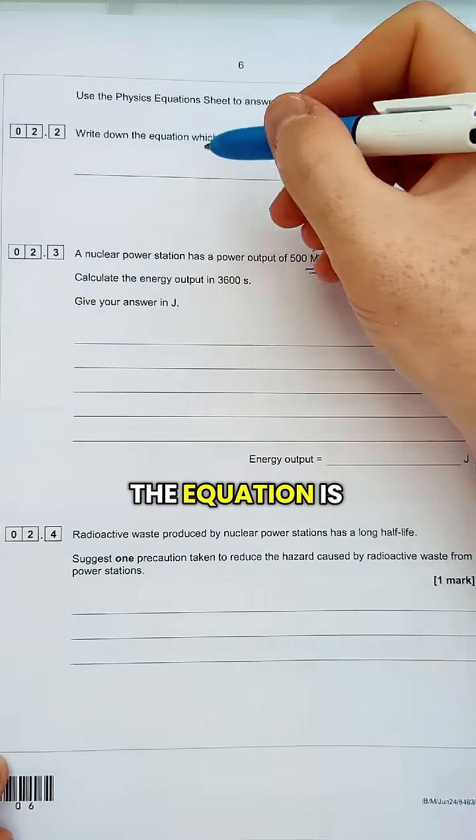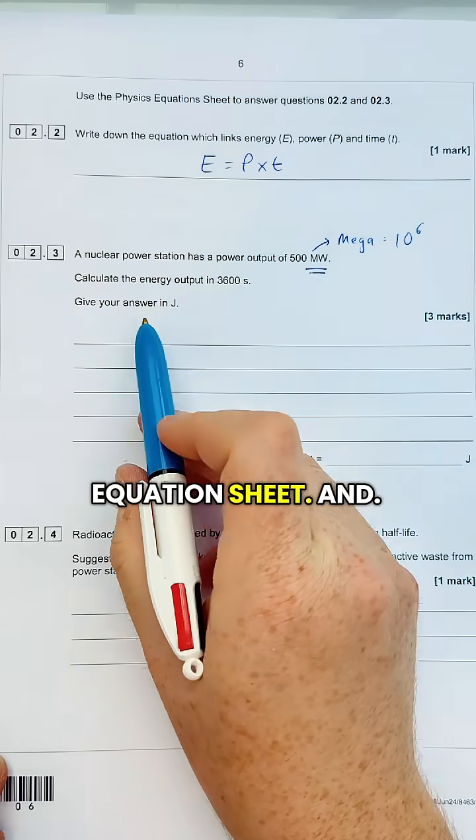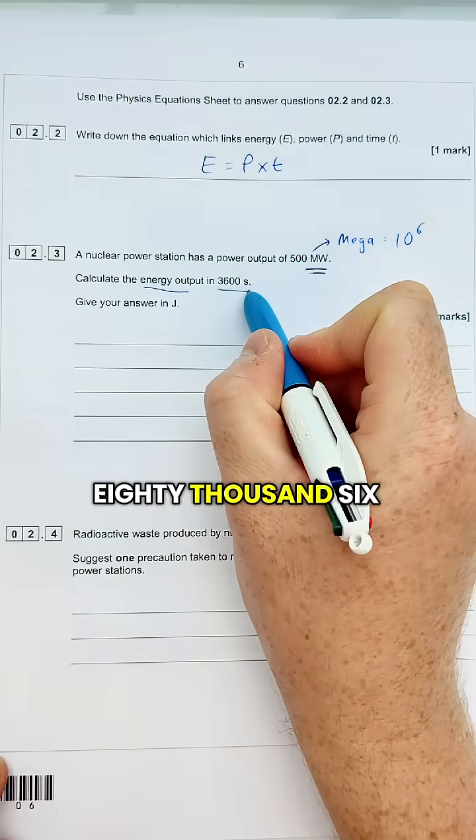Now to answer the top bit, the equation is energy equals power times time, or power equals energy over time. Both are on your equation sheet, and we've got to find the energy output in 3,600 seconds.